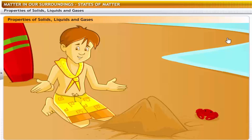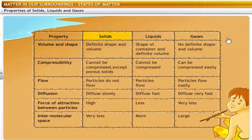Now let me summarize. Solids have definite shape and volume, cannot be compressed except porous solids, particles do not flow, diffuse slowly, high force of attraction between particles, very less intermolecular space. Liquids take the shape of the container and have definite volume, cannot be compressed, particles flow, diffuse fast, less force of attraction between particles, more intermolecular space.